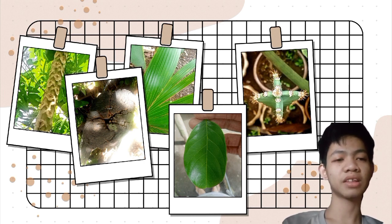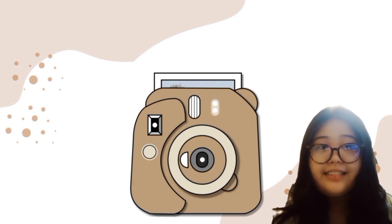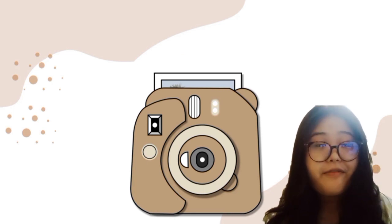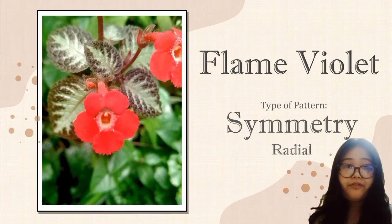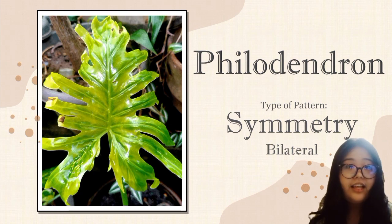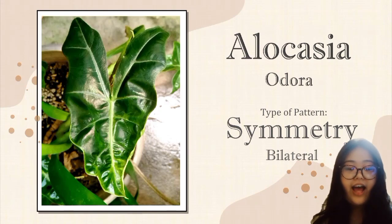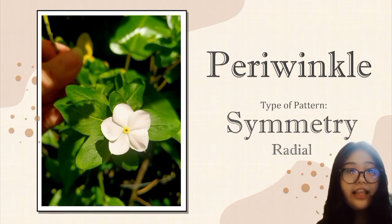There are a lot of things in our surroundings and nature that have math in their very essence. I have captured some plants and flowers which have different mathematical patterns. For example, the flame violet has radial symmetry, a lagunema flower has bilateral symmetry, the tree pelodrandon has bilateral symmetry, alocasia odora has asymmetrical symmetry, and the last one is the periwinkle, which has diradial symmetry.